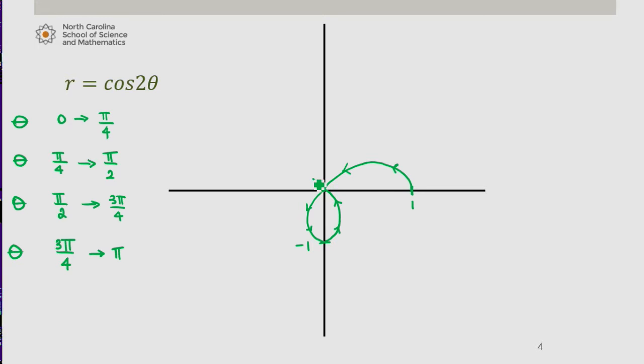Now this coordinate is at negative 1, 0 because we're looking when theta is pi, so we're already oriented along this negative x axis.